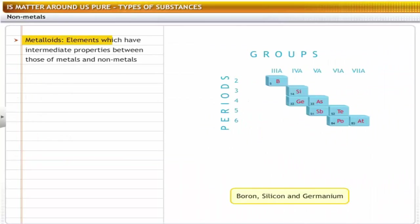The elements which have intermediate properties between those of metals and non-metals are called metalloids. They are amphoteric in nature — metalloids react both with acids and bases. For example: boron, silicon, and germanium.